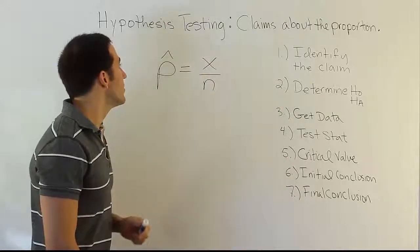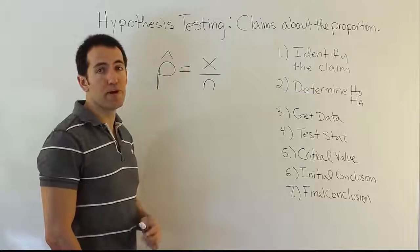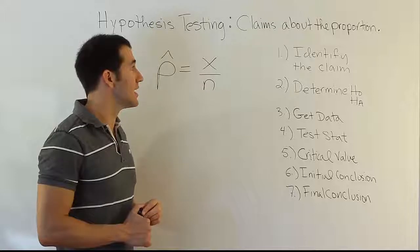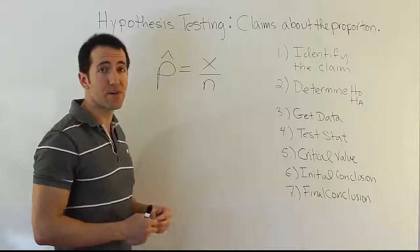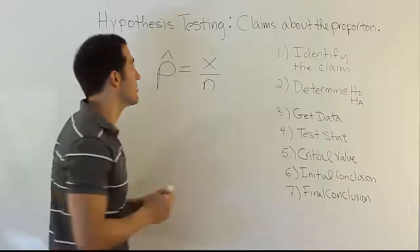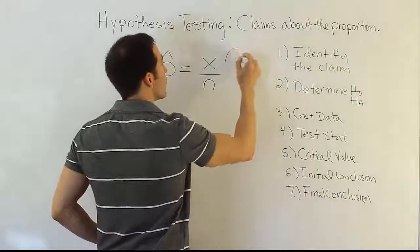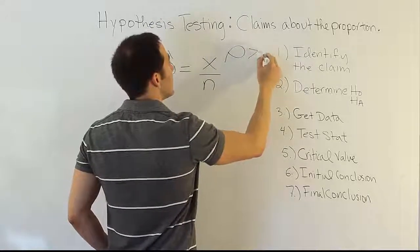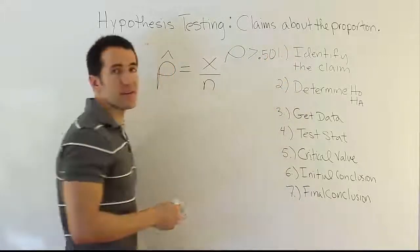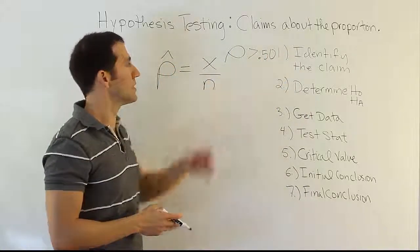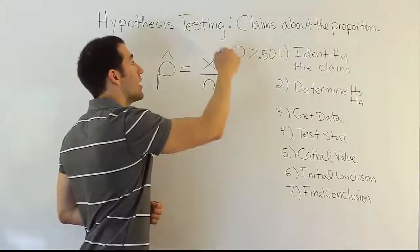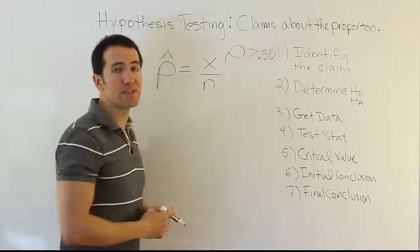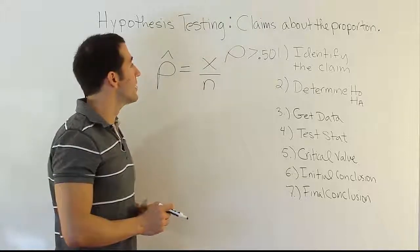So let's start with that then. What's going to change with step one when we do this procedure? Well, when you're testing a claim about a proportion, the main thing that changes is that the symbol changes. You're no longer testing it about the mean. So you're going to have symbols like rho is greater than, say, 50%. 50% as a decimal is 0.5. So that might be your claim in the problem instead of having mu. It won't be mu is greater than 50. It'll be rho, the population symbol for proportion.